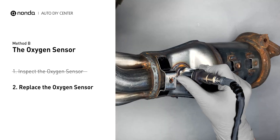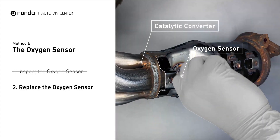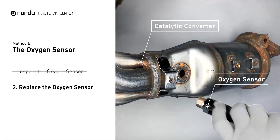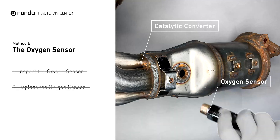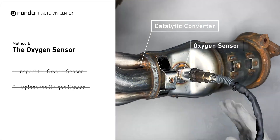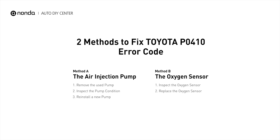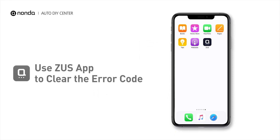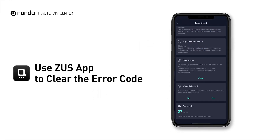If damages are found, then replace the oxygen sensor. So here are two of the most practical solutions to fix Toyota's P0410 error code. After the repair, you can now use the Zeus app to clear the error code.